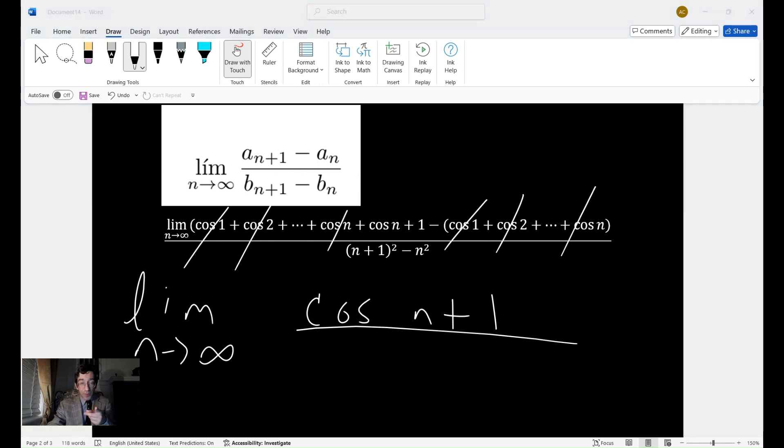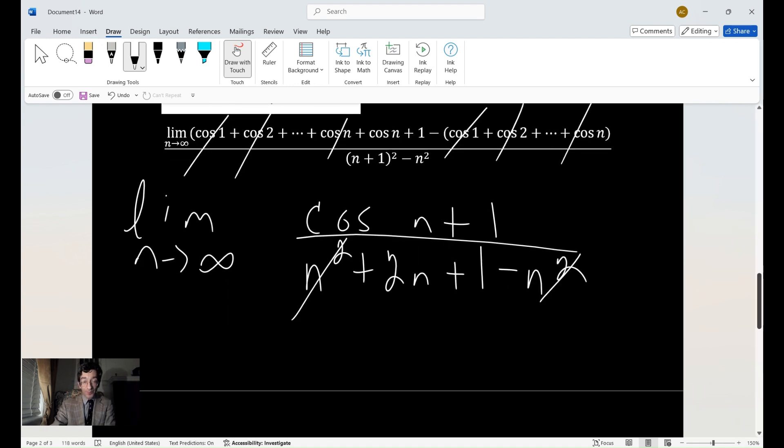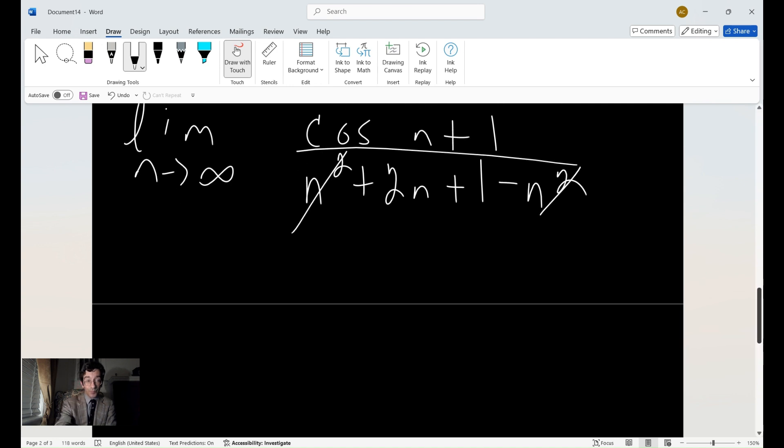the n plus 1 squared becomes, you can make, we have n squared. We can make that n squared plus 2n plus 1 minus n squared. And of course, once again, the n squares cancel out. So we have the cosine of n plus 1 over 2n plus 1.